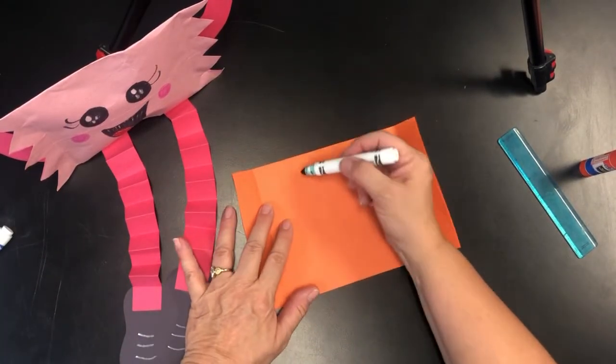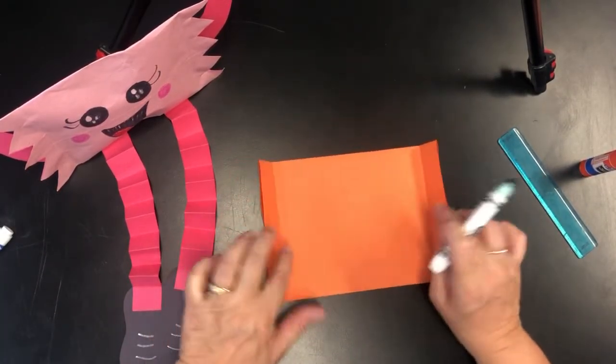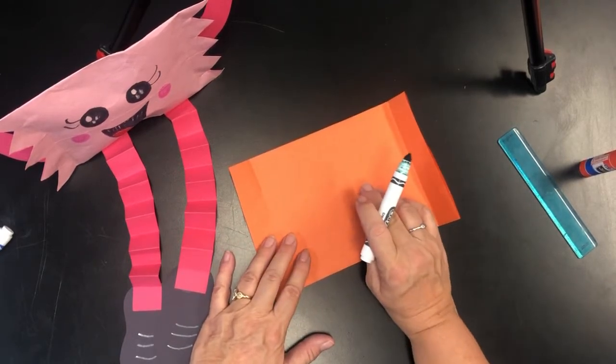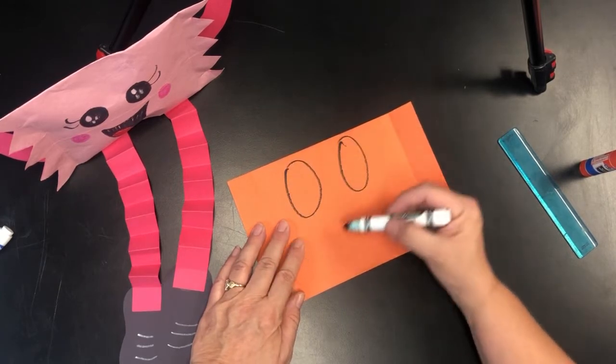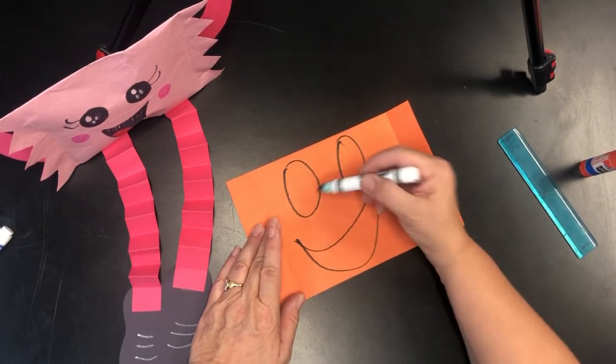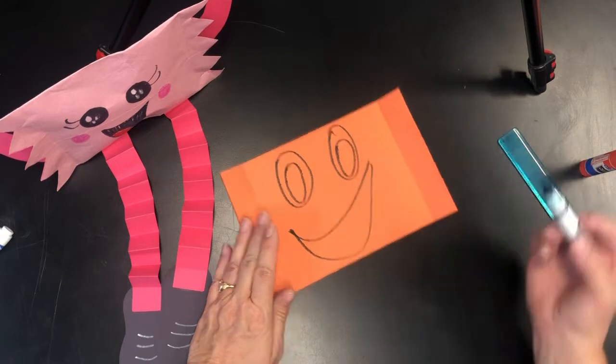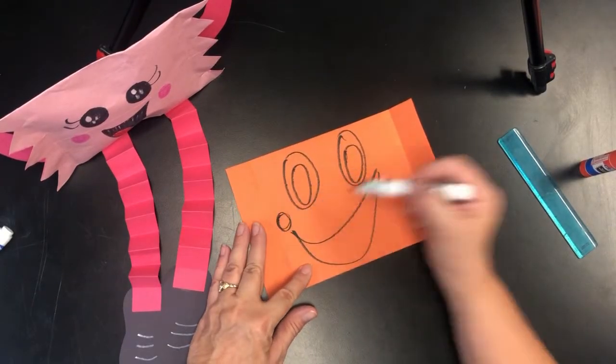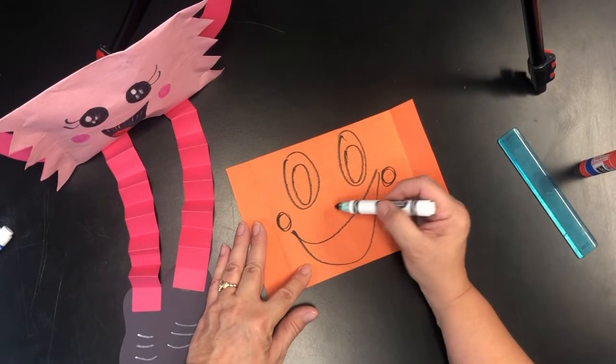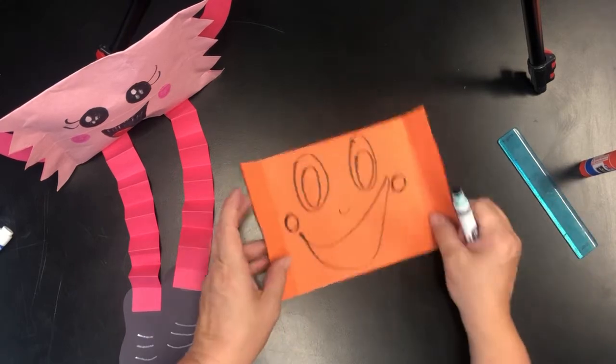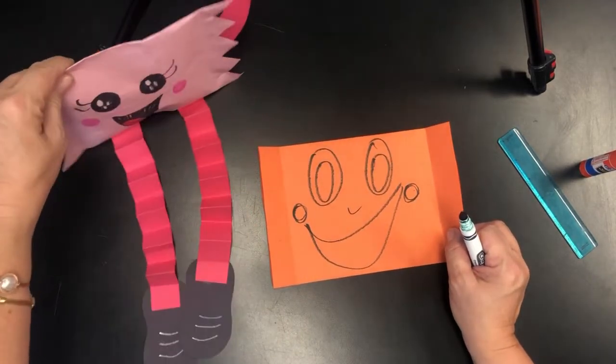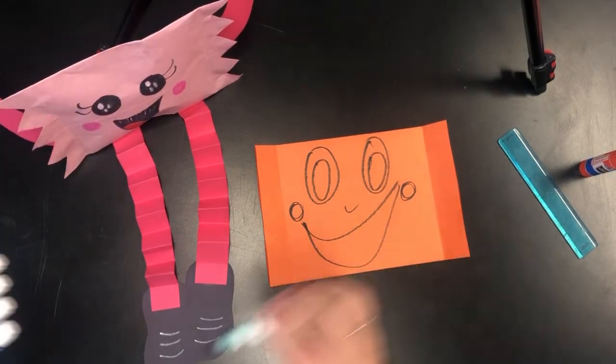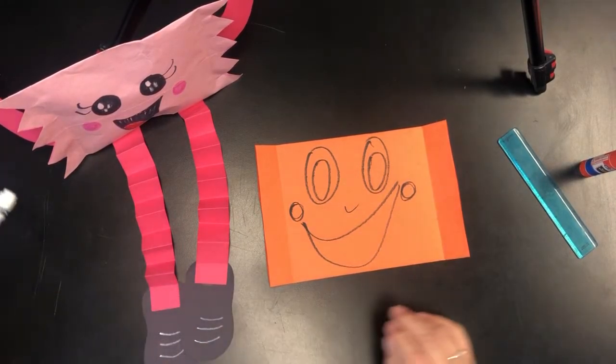So you can get as elaborate with your face as you want. Just don't go over the line there for the sealed edge where we're gonna be cutting the triangles. So I'm just gonna quickly draw a little face here. Little cheeks, little nose. That is my face. You can be elaborate as you want. You can make a simple face. You can make a classic smiley face. Whatever you want.